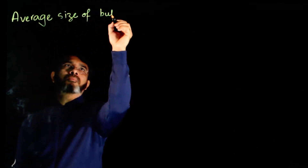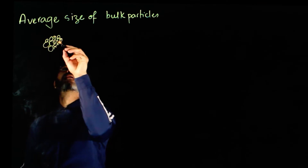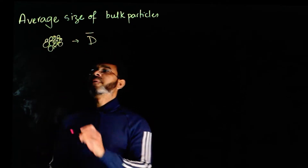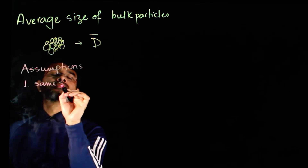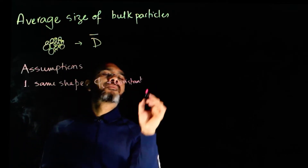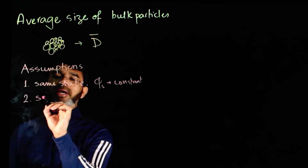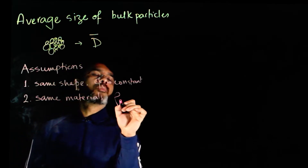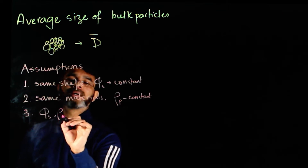In this session we talk about the concept of average size of a bulk of particles. If you have a bulk of particles with different sizes, what is the average size? We have some assumptions: first, the particles are of the same shape, which gives φₛ to be constant; second, the particles are of the same material, which gives ρₚ to be constant. We'll assume that both φₛ and ρₚ are known.